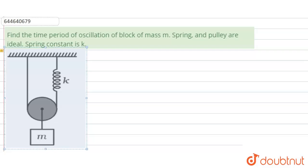Hello everyone, let us try to solve the given problem. The problem states: find the time period of oscillation of block of mass m. We have a block here with mass small m. Spring and the pulleys are ideal. We have a spring here and the pulley here, and they are ideal. The spring constant is k and we have to find the time period of oscillation of block.